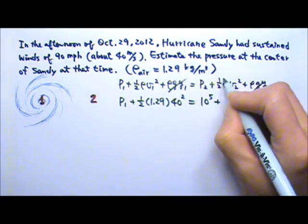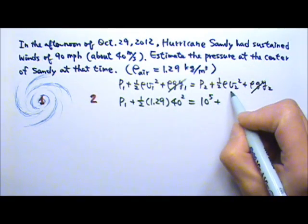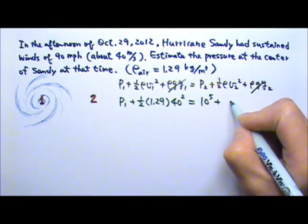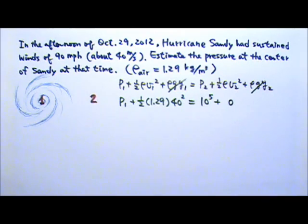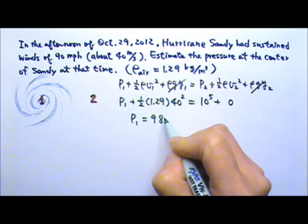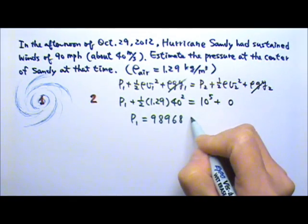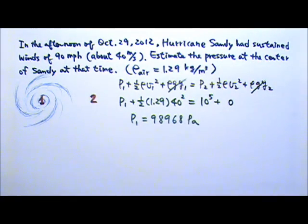Plus, over here in a calm region, the airflow speed is almost zero. So I can find P1 to be 98,968 pascals. In a windy region, the pressure is lower because the flow speed is higher.